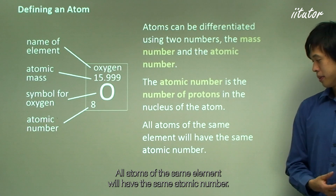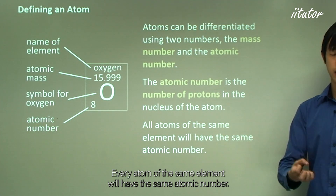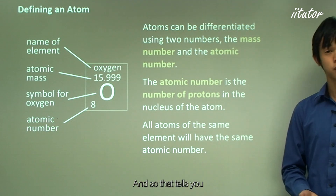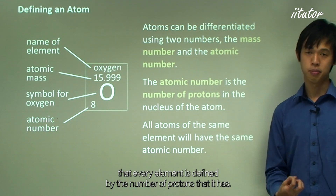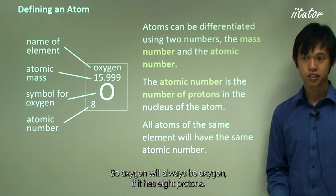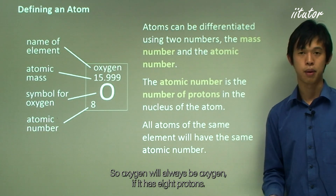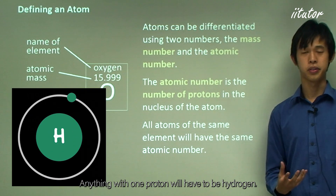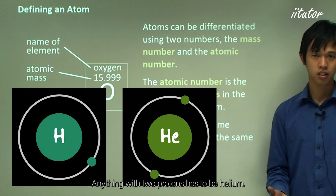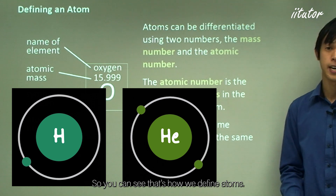All atoms of the same element will have the same atomic number, meaning every element is defined by the number of protons it has. Oxygen will always be oxygen if there are eight protons. Anything with one proton must be hydrogen, and anything with two protons must be helium.